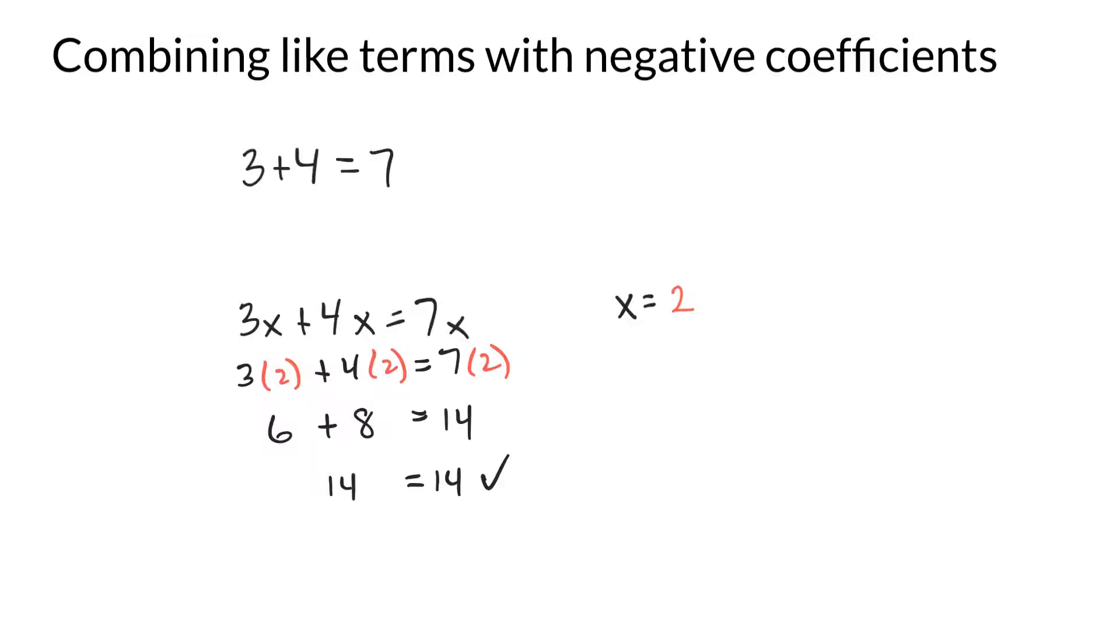And that's really the core of combining like terms. Where this right here, that's called each individual thing is a term. And the terms are separated by the addition sign. So terms are separated by addition or subtraction.